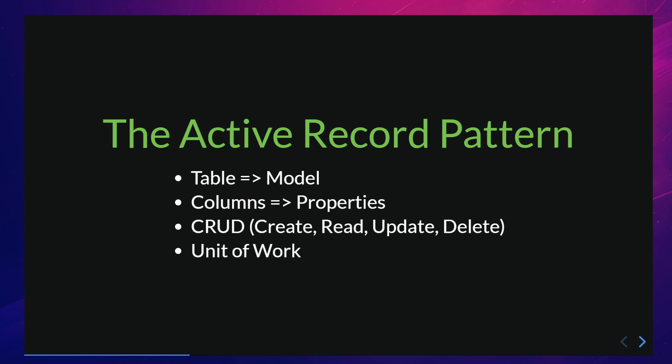In the active record pattern, each object has the ability to persist itself to the database, which means that the object knows how to insert, update, or delete itself from the database. This pattern also provides an easy and intuitive way to work with databases, as it allows developers to work with objects and properties instead of writing raw SQL queries. An ORM also implements the unit of work pattern, which is responsible for keeping track of all changes made to the objects and then flushes all the changes to the database in one go. This allows developers to make multiple changes on the objects and persist them all at once instead of making a separate database call for each change.